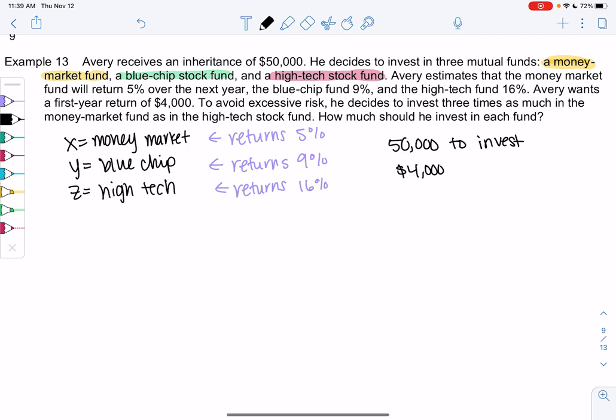That's in addition to the $50,000. That's what returns are. You might be wondering, why wouldn't we just put everything into the high-tech since it has the highest percent? Those tend to have more risk, so it's easier to lose your money. To avoid excessive risk, he decides to invest three times as much in the money market fund as the high-tech.